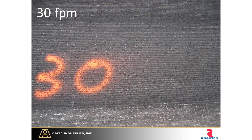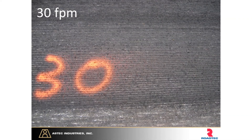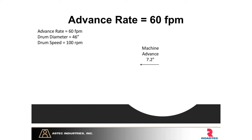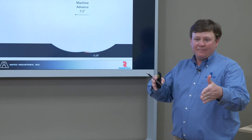What we've come to accept as a more standard milled surface is really incorrect. You start to see a V pattern once we hit a certain speed — we call it a chevron pattern — and that means the machine is out-running the drum. Our forward propel speed is faster than the drum can remove the residual material. Moving up to 60 feet per minute, that same tooth now finds the machine has traveled 7.2 inches by the time it comes back around, leaving over a quarter inch of material behind. The chevron pattern is caused by these pieces of residual material lining up to create that V.